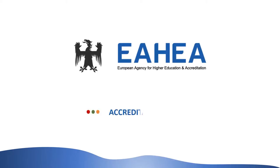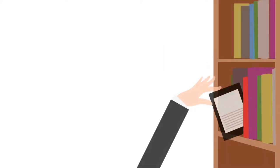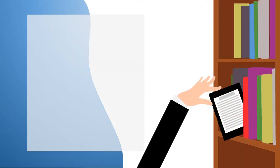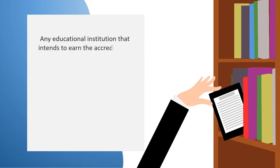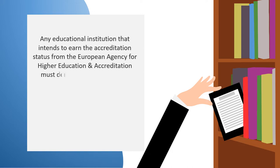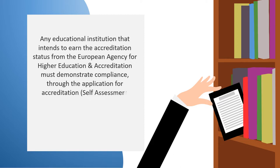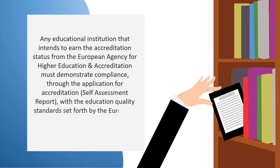EAHEA Accreditation Process. Any educational institution that intends to earn the accreditation status from the European Agency for Higher Education and Accreditation must demonstrate compliance through the application for accreditation with the education quality standards set forth by the European Agency for Higher Education and Accreditation.